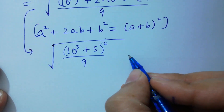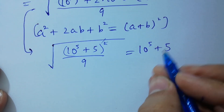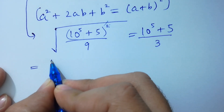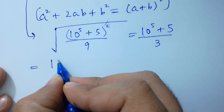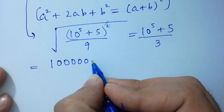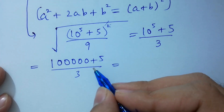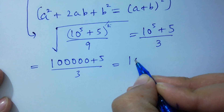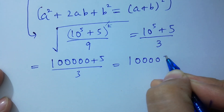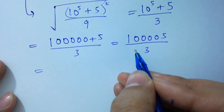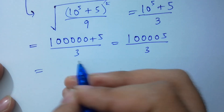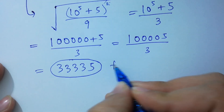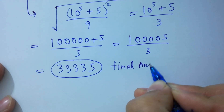The square root cancels with the square, giving us 10^5 plus 5 over square root of 9, which is 3. Now 10^5 is 100000, so 100000 plus 5 is 100005, and 100005 over 3 equals 33335, which is our final answer without a calculator.